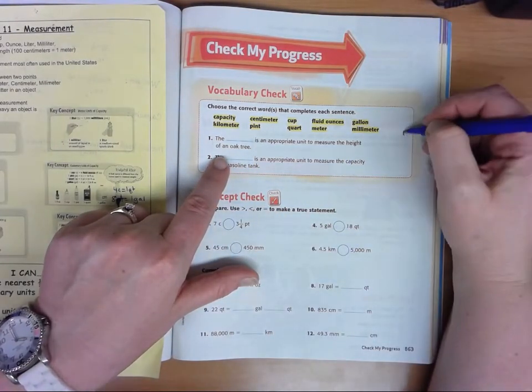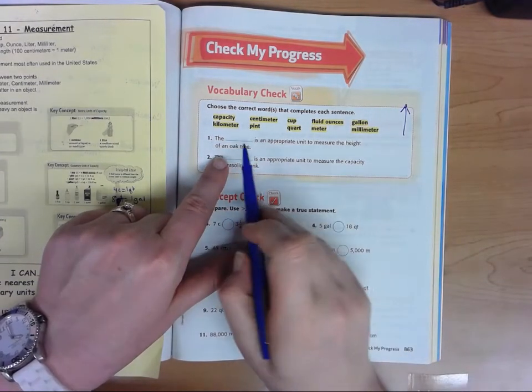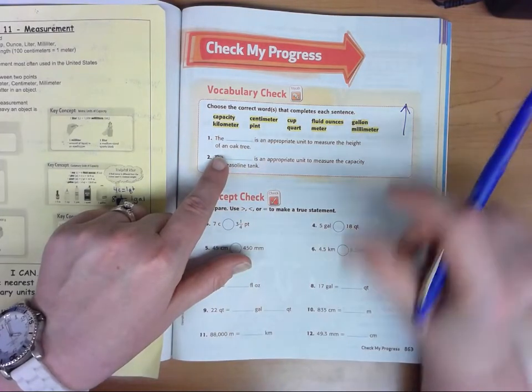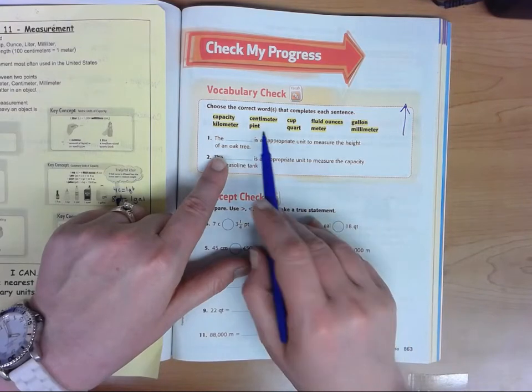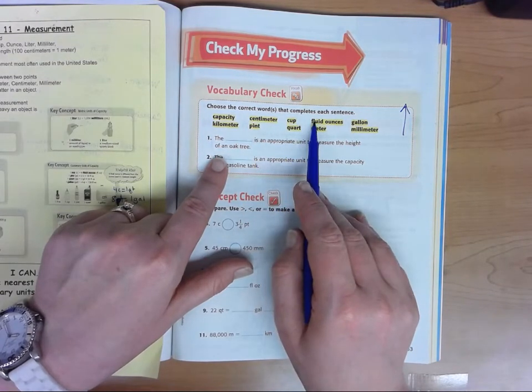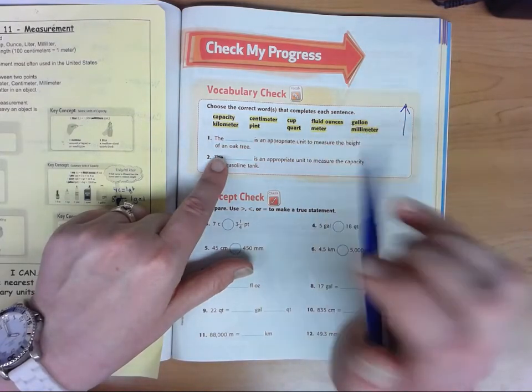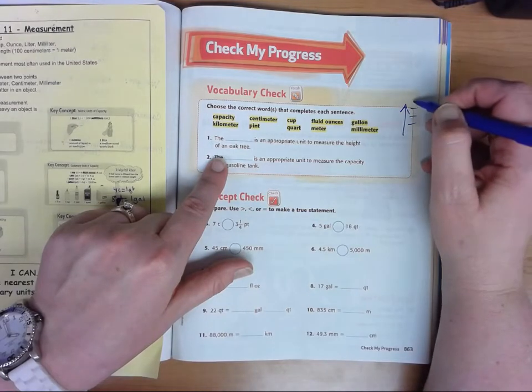Well, an oak tree we think of as tall. So what would we measure it as being tall? Capacity? Nope. Centimeters are little. Kilometers are almost a mile. An oak tree isn't a mile. Pints are liquid. Cups are liquid. Quarts are liquid. Fluid ounces are liquid. Gallons are liquid. Millimeters are teeny teeny. And meters. Meters is what we would use to measure the height of an oak tree.